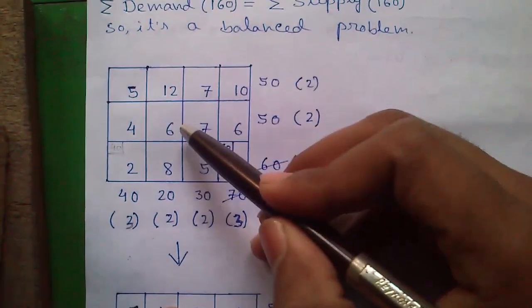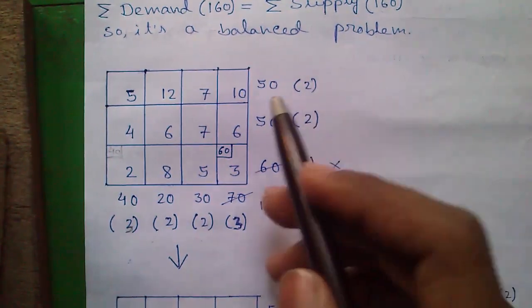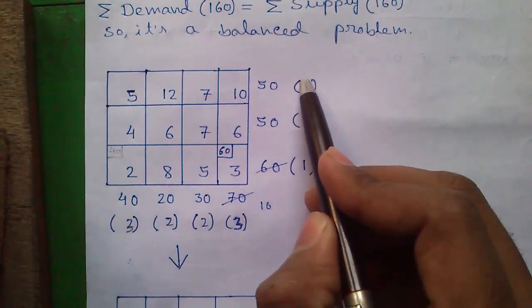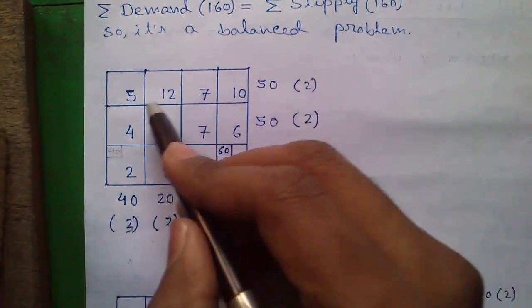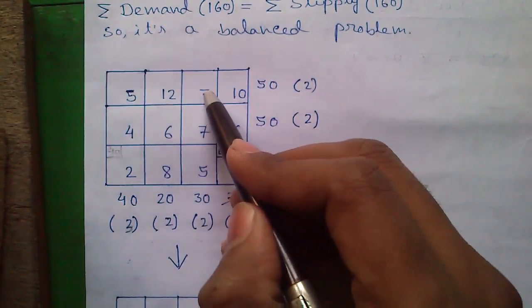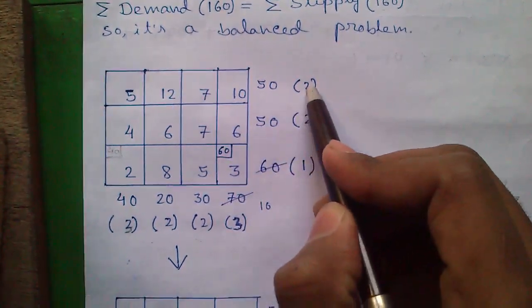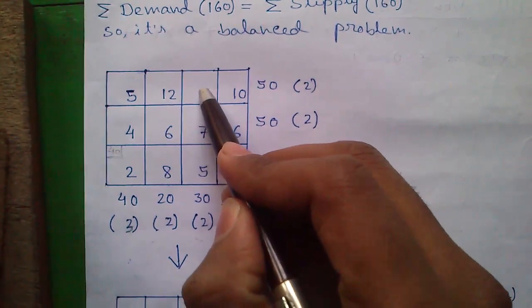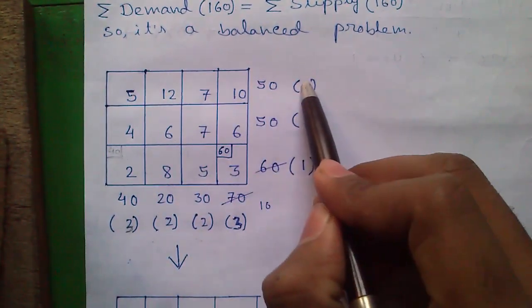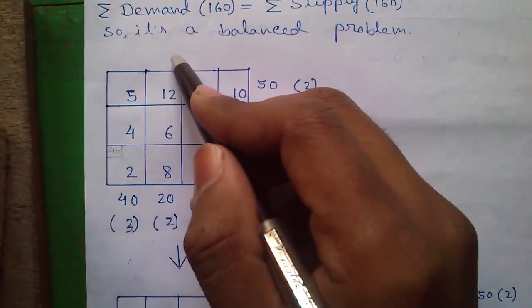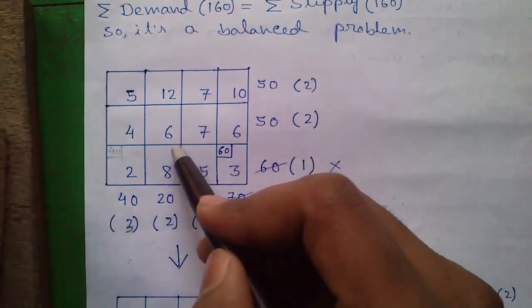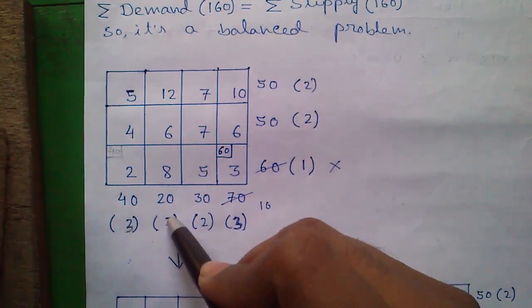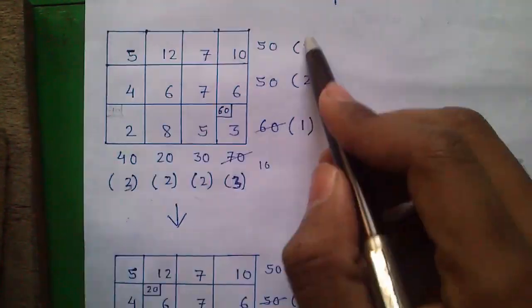Next, I have written the cost matrix. The next step is to find the smallest number and the next smallest number in each row and each column, then subtract the smallest from the second smallest and write the difference in brackets outside. For example, in the first row, the smallest number is 5 and the next smallest is 7, so 7 minus 5 equals 2. Similarly, in column 2, the smallest is 6 and the next smallest is 8, so 8 minus 6 equals 2. Complete this step for all rows and columns.